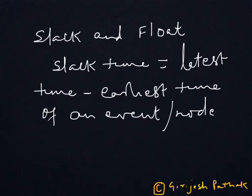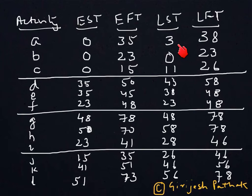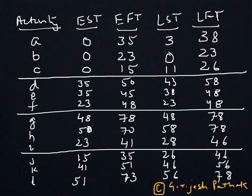Now we talk about float, which is based on activity-based analysis. For the same project, for various activities we have computed earliest start time, earliest finish time, latest start time, and latest finish time. For activity A, the earliest start time is 0 but latest start time is 3, so at the start we have 3 days extra. We can compute float using the start time or finish time — either latest start time minus earliest start time, or latest finish time minus earliest finish time. This tells us how much buffer we have in terms of time at the start or end of the activity.